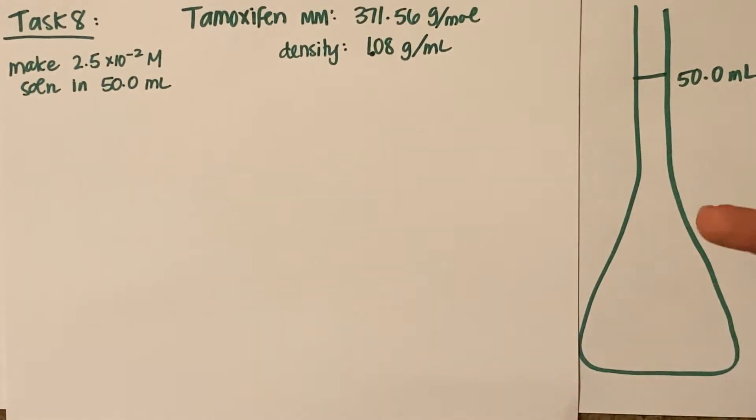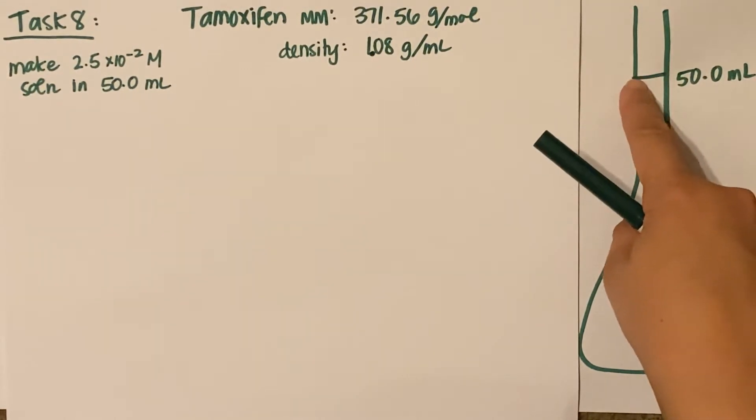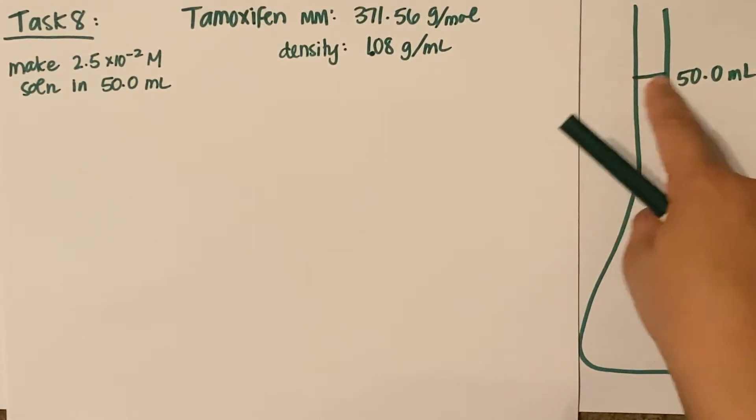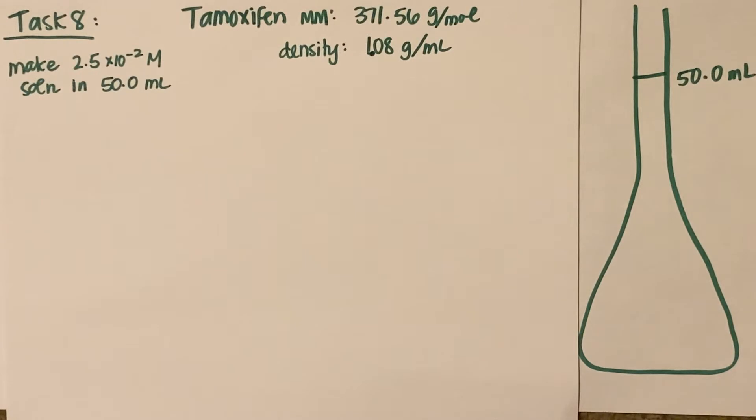This is the way that we would make drugs or actually make something that you would use. You add in your amount of drug, whatever amount of grams, and then fill up the rest with water until the meniscus hits exactly that line on the volumetric flask. They're very accurate.